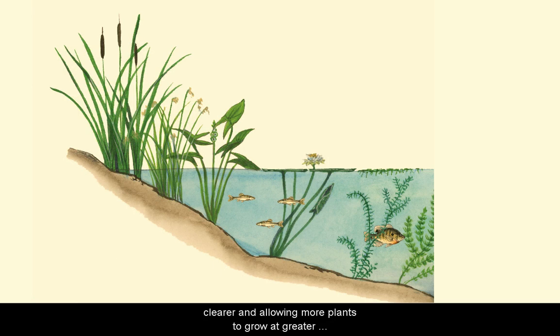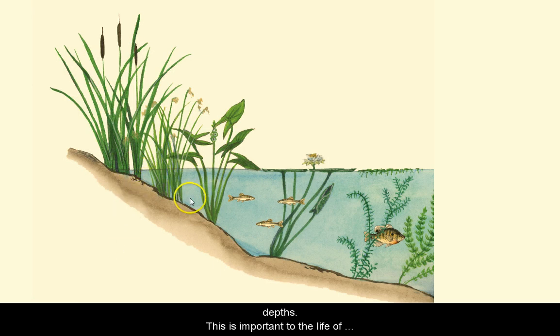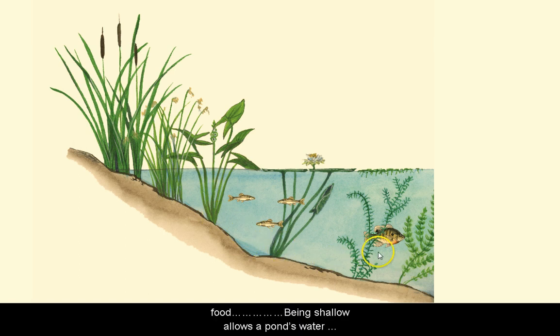Plant roots grow into the pond bottom and hold the soil, making the water even clearer and allowing more plants to grow at greater depths. This is important to the life of a pond because the plants produce much more than food.